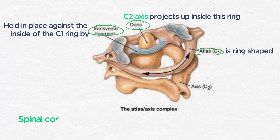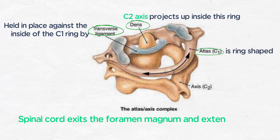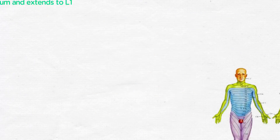The spinal cord exits the foramen magnum of the skull and extends down to about L1, where it tapers out as the conus medullaris and the cauda equina. So the spinal cord actually ends around L1.